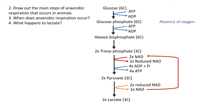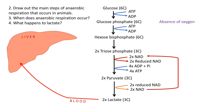Lactate is an acid, so it reduces the pH in the tissue it's in. Most often this is in skeletal muscle during exercise, and an accumulation of lactate can impair muscle function. To get rid of the lactate, it's transported in the blood to the liver, where it can be converted to glucose and then into glycogen.